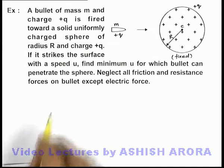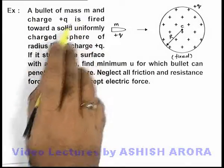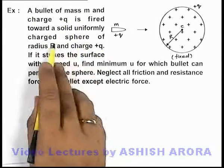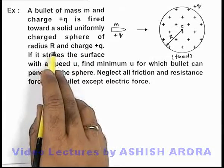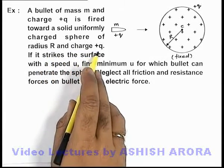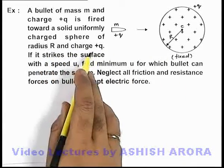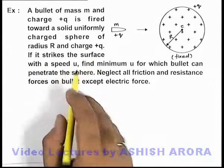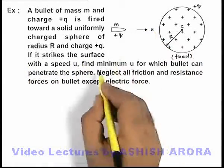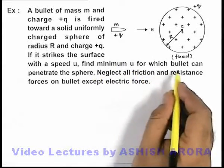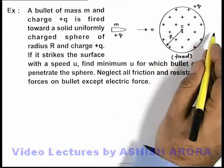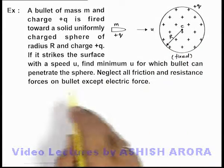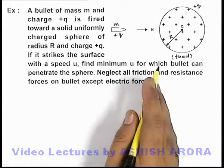In this example, we are given that a bullet of mass m and charge +q is fired over a solid uniformly charged sphere of radius R and charge +Q — that means the charges on the two are the same. It is given that the bullet strikes the surface with speed u. Find the minimum u for which the bullet can penetrate the sphere, neglecting all friction and resistance forces except the electric force.